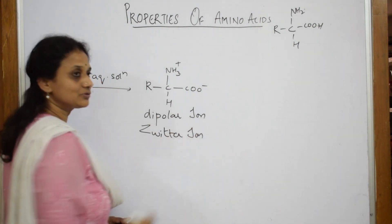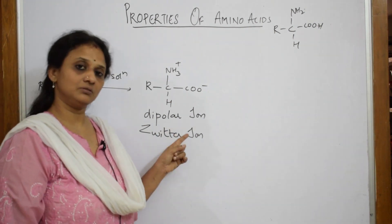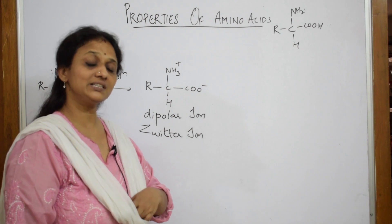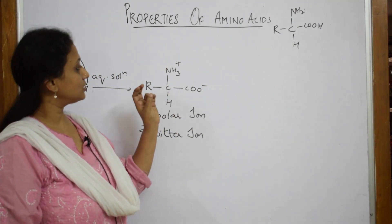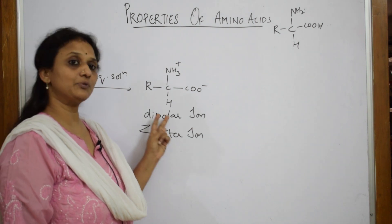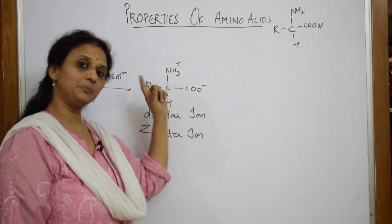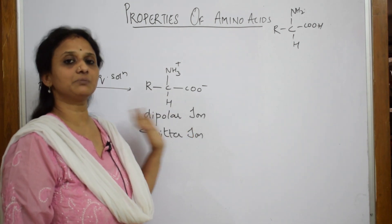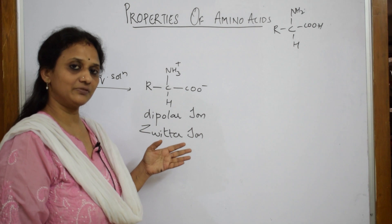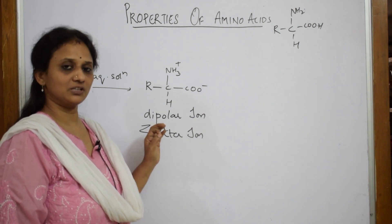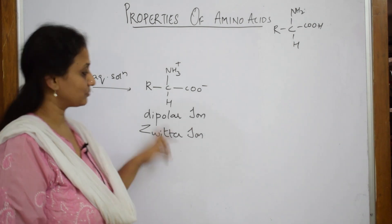If your book is asking you to define zwitterion, just write: zwitterion is a dipolar ion or a neutral molecule. Why is it neutral? Because it is both positive and negative. Zwitterion is a dipolar ion or a neutral molecule where it possesses both the positive and the negative charge in the same molecule.